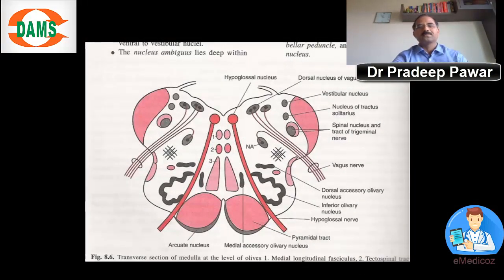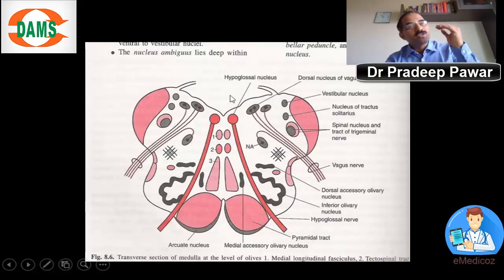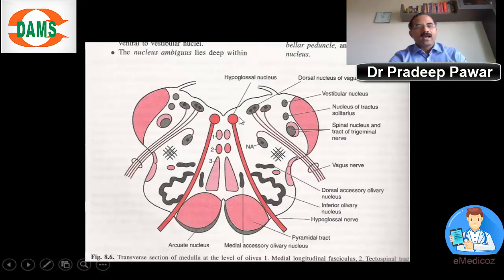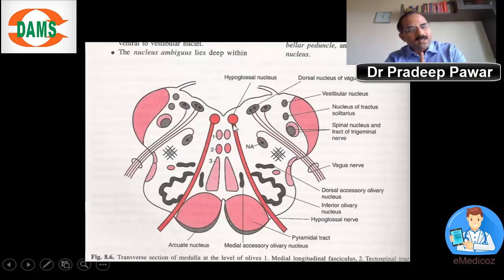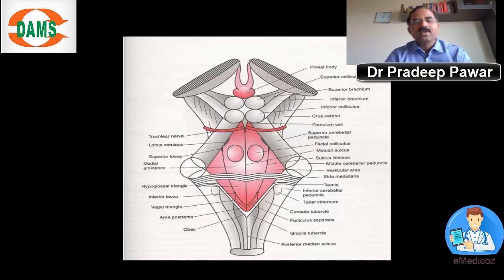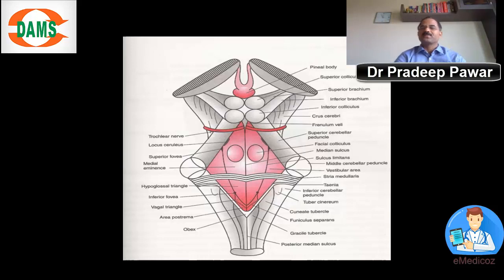The nucleus of the hypoglossal nerve is located in the medulla. Have a look at this slide — this is a section of the medulla showing the fourth ventricle, which places us in the upper half of the medulla. That is the nucleus of the hypoglossal nerve, and this nucleus forms an elevation outside, which we call the hypoglossal triangle, located in the floor of the fourth ventricle.